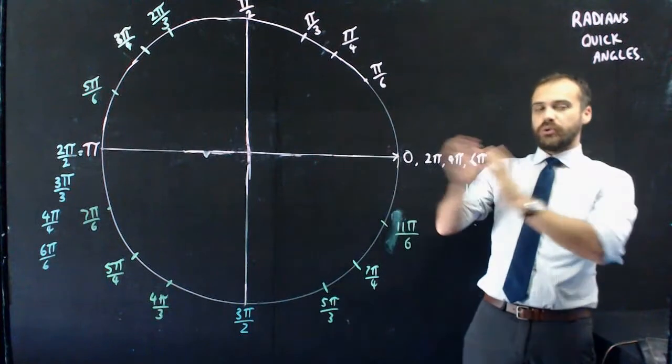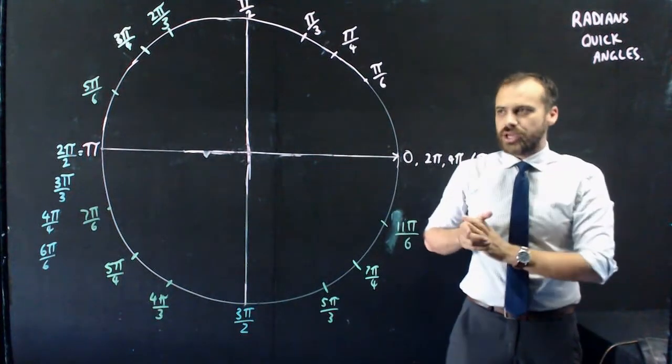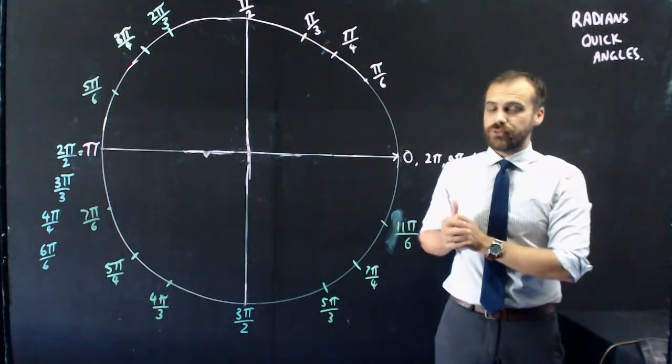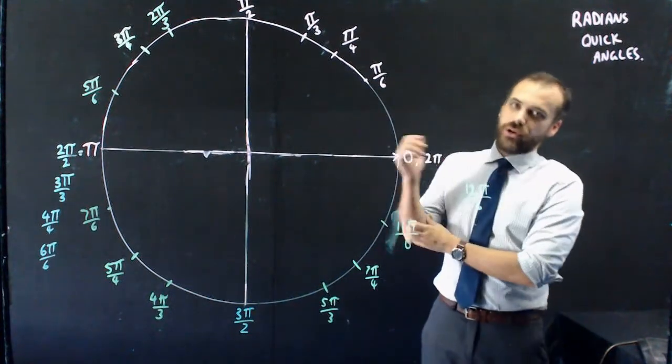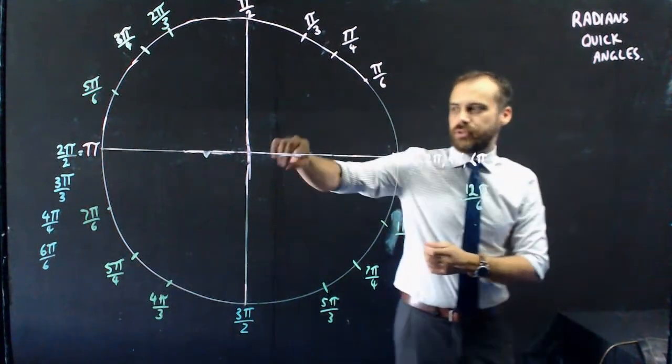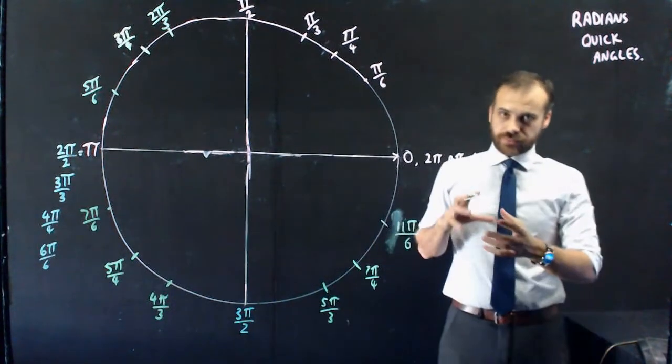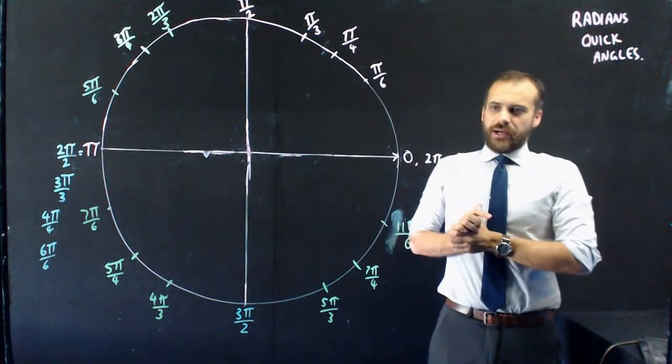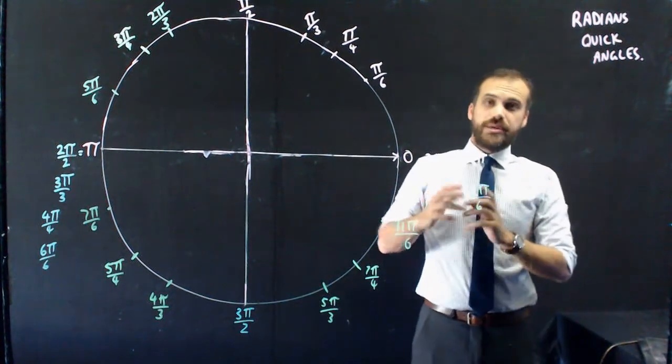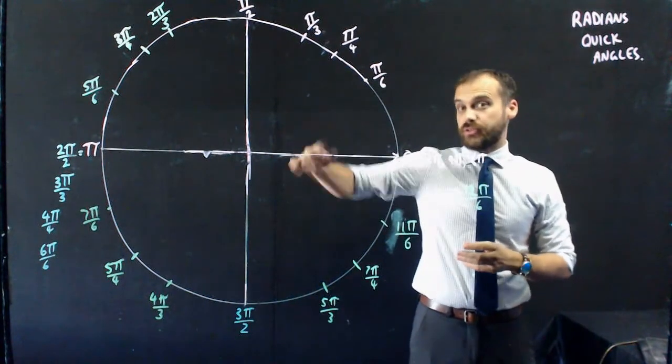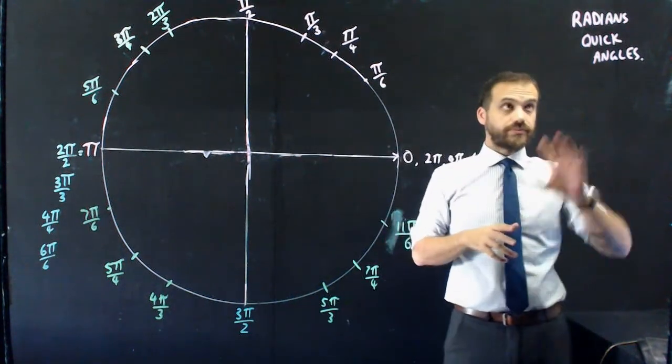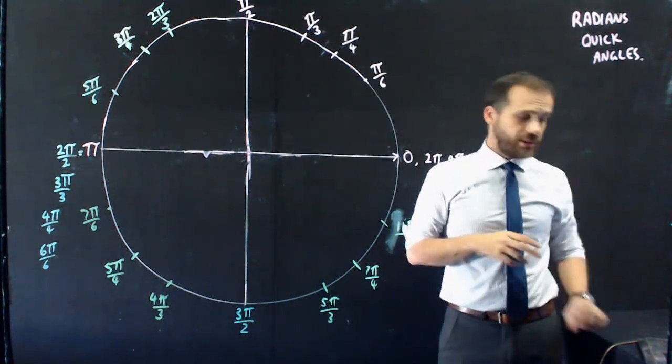Those are what I call your quick angles, and you should get really, really comfortable with seeing them and being able to think. If I say 5π/4, you should immediately think of a spin about that big. If I say 2π, you should immediately think of a 360 degree spin. If I say 4π, you should think of a 720 degree spin. Those are your quick angles.